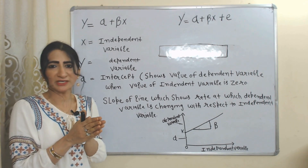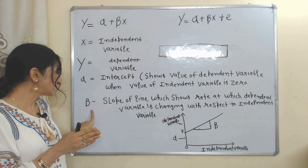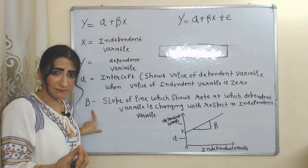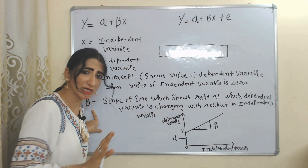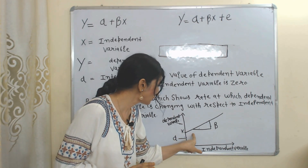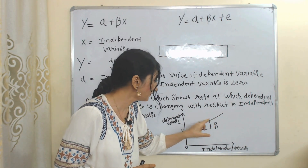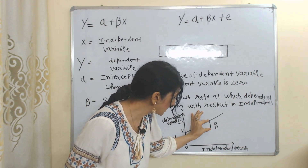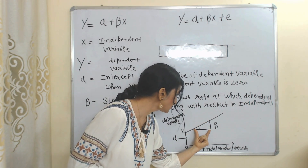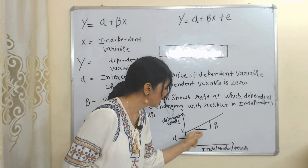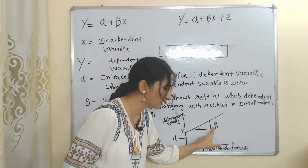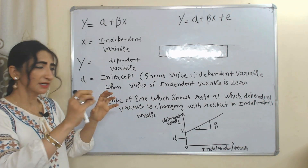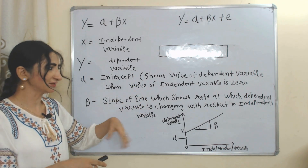That part equals alpha because alpha is the intercept showing the value of the dependent variable when the independent variable is zero. Beta (β) is the slope of the line, which shows how much the dependent variable will change in response to a change in the independent variable. You can see a positively sloped curve here, showing how much the dependent variable changes in response to a change in the independent variable.